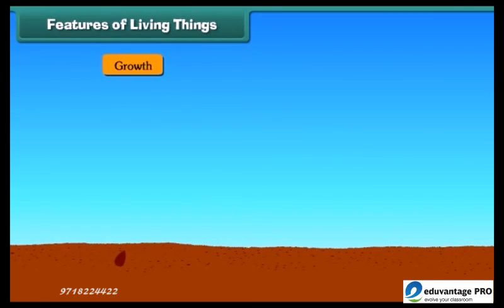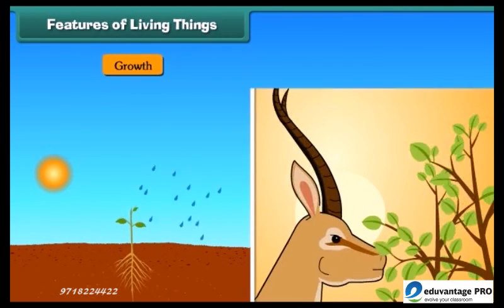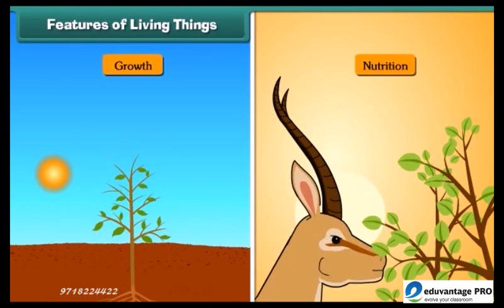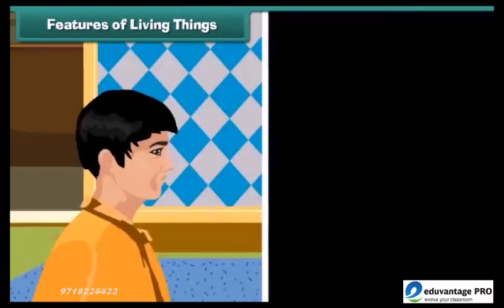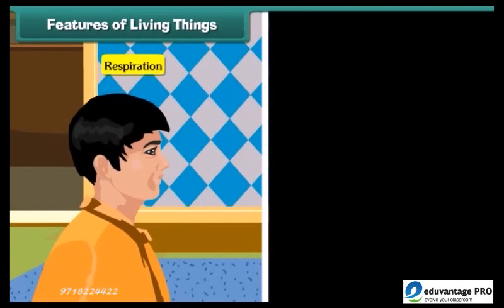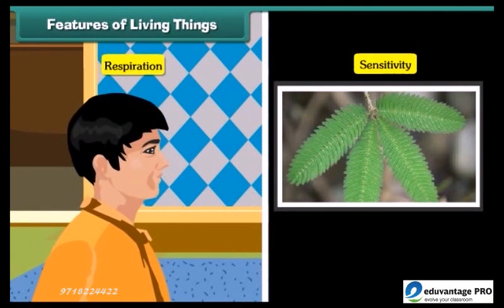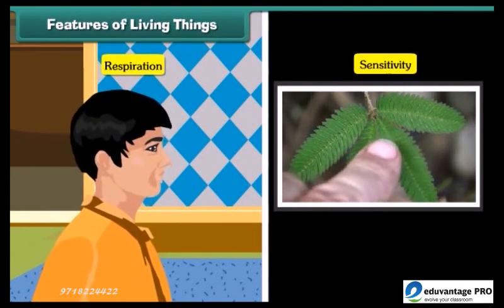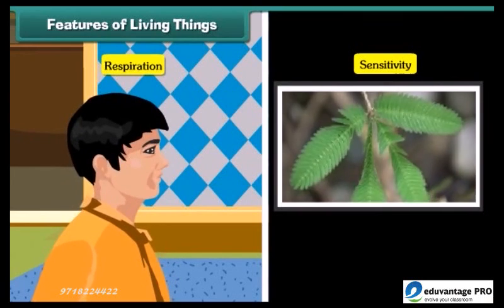All living things also show growth in their body — they eat food for their growth and living. Along with these features, they also breathe, and they can feel and are sensitive to their surroundings.